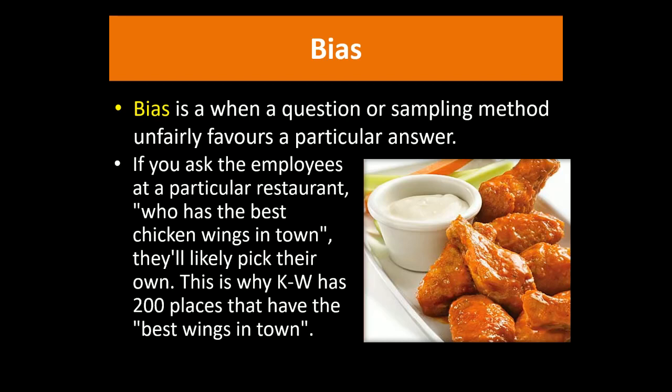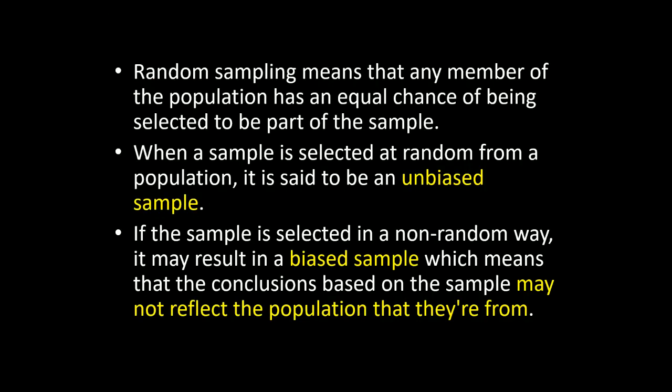We already talked about sampling methods and trying to do random sampling so that every person in the population has an equal chance of being chosen. When we do that, we say the sample is unbiased. That doesn't mean there can't be some coincidence where it's not representative, but it's as representative as we can get. As soon as we hand-pick things to put in our sample, we're biasing it on purpose.